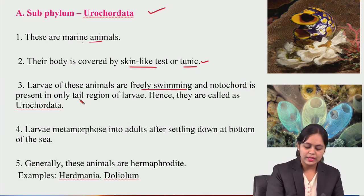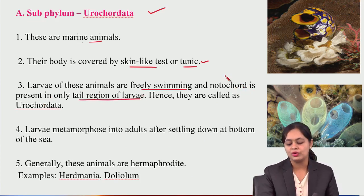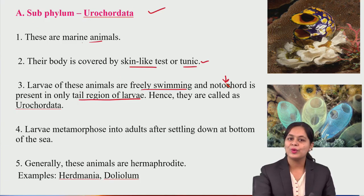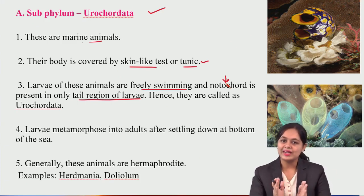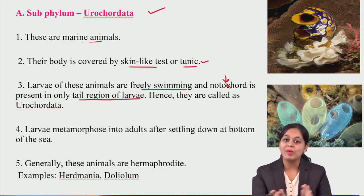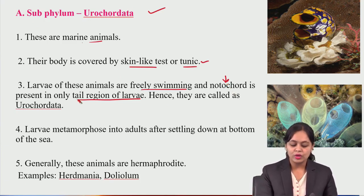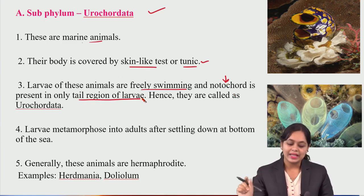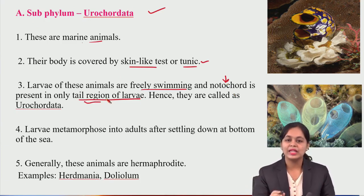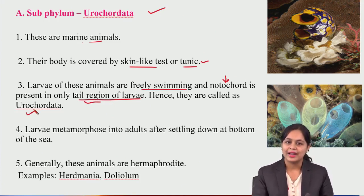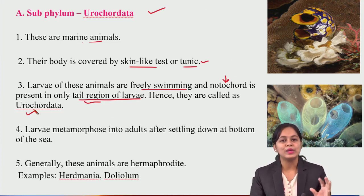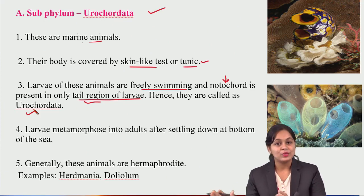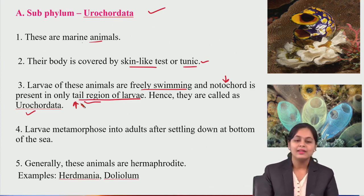In Urochordata, the notochord is present only in the tail region. That is the relationship with the tail region — the notochord is found at the tail, and hence they are called Urochordata. Urochordata means the notochord is present in the tail region.